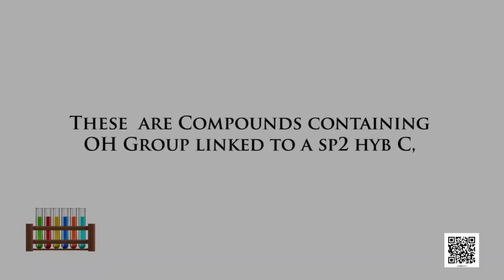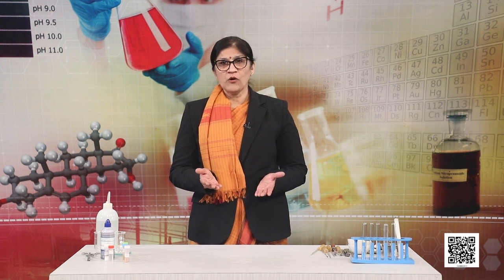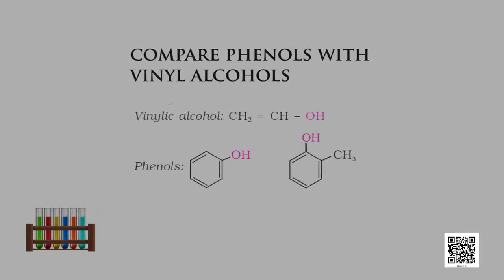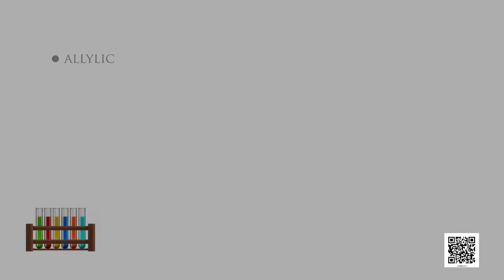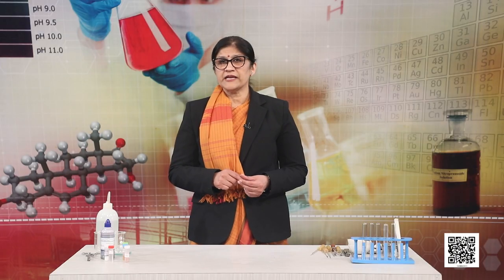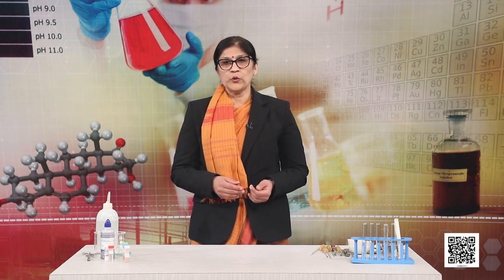Similarly, you may compare a phenol with a vinylic alcohol. A phenol has a benzene ring containing the OH group, meaning an sp2 hybridized carbon carries the OH group. The OH group linked to an aryl carbon is shown in the slide. Understanding this classification is very important, as these structural changes affect the properties of the compounds with OH groups.